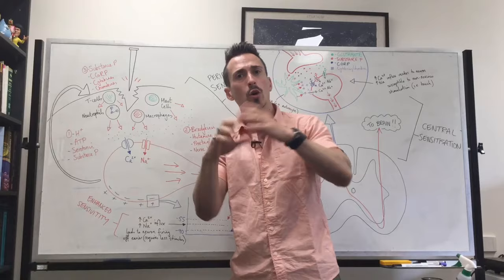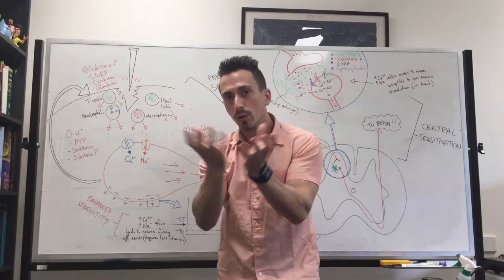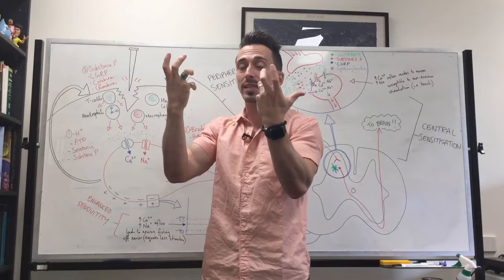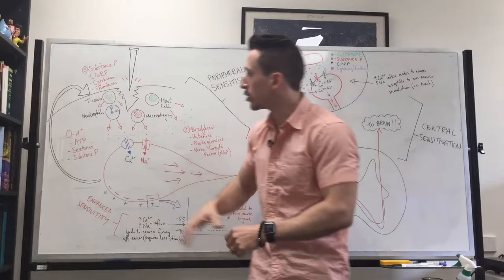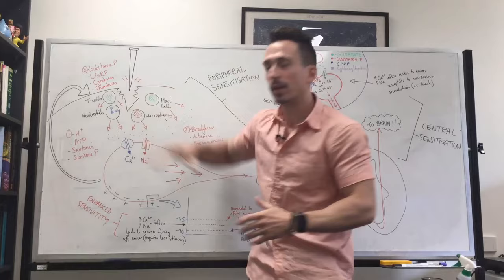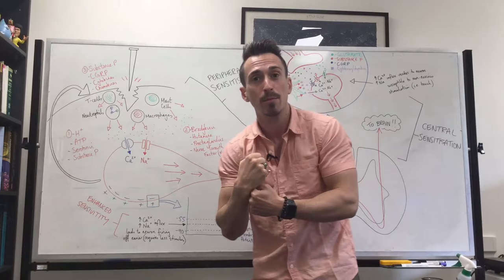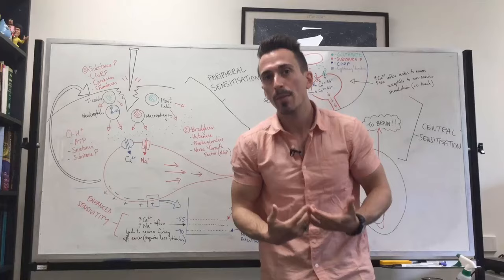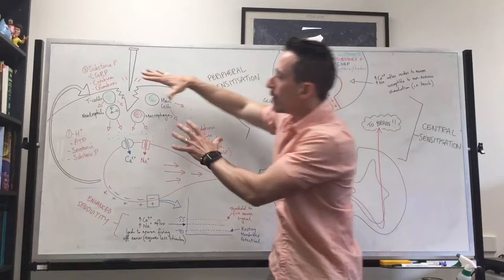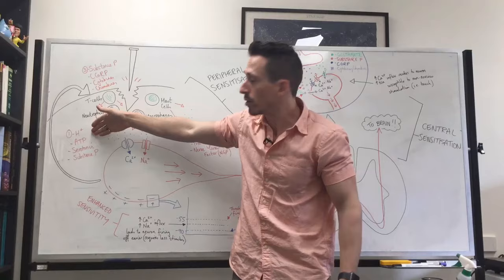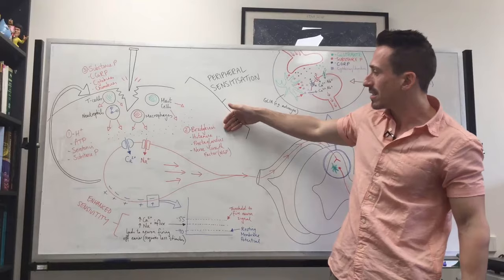Damage to vascularized tissue inevitably results in inflammation. The four cardinal signs — redness, heat, pain, and swelling — all occur because blood vessels dilate, more blood gets to the area, more pores open in these blood vessels, and fluid leaks out along with white blood cells and other cells to fight infection. Cells including mast cells, macrophages, neutrophils, and T-cells arrive; many engulf damaged tissue or release pro-inflammatory chemicals. These include hydrogen ions, ATP, serotonin, substance P, bradykinin, histamine, prostaglandins, and nerve growth factors.